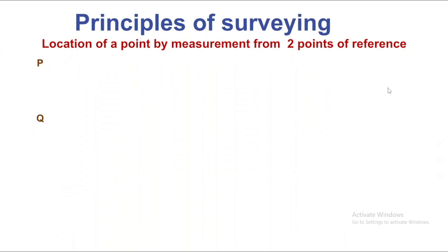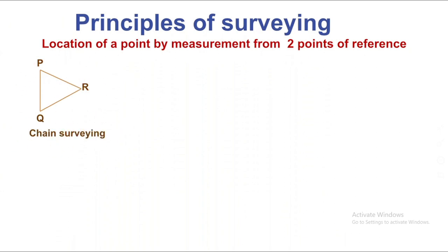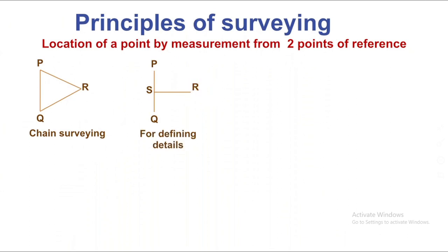When we are measuring the distance, we are measuring along the surface. PMQ is the reference point, PQ is the distance, and R is the point we are locating. PQ is the perpendicular and SR is the distance for defining details. We can use this method.